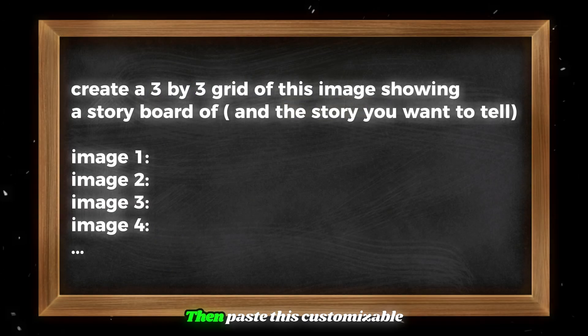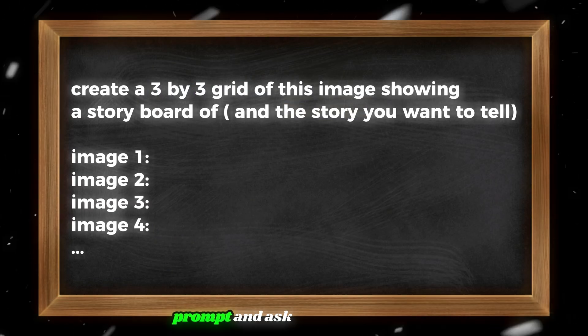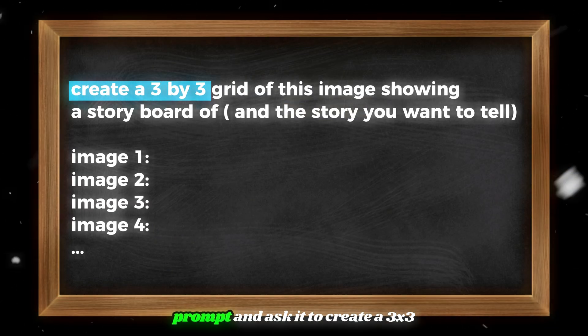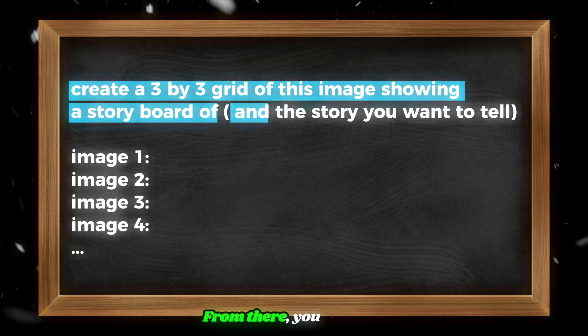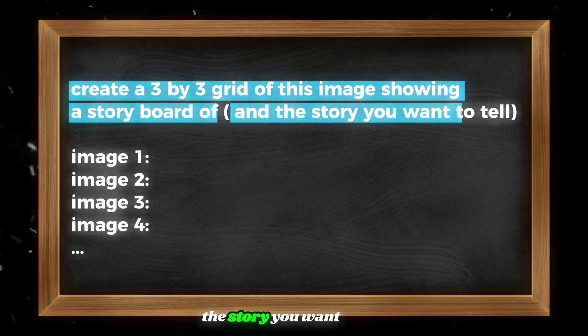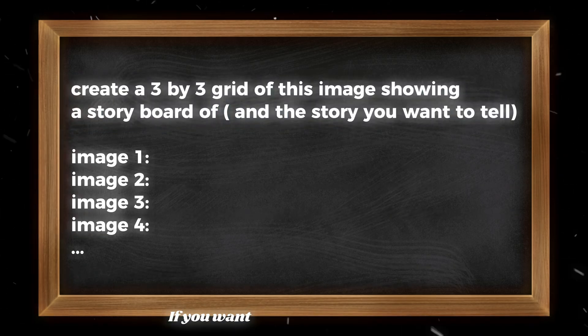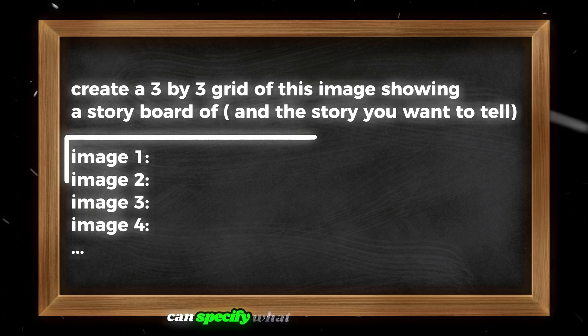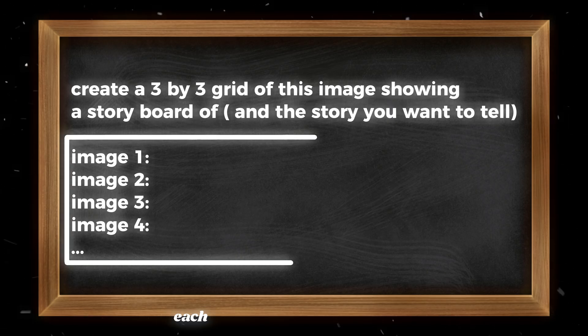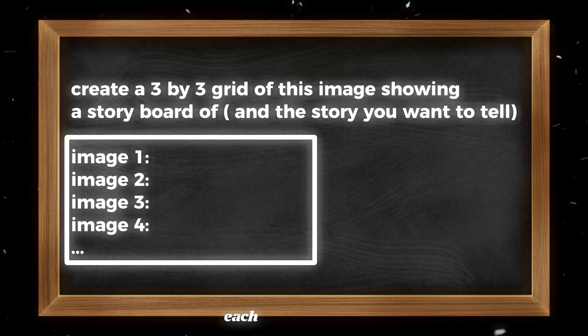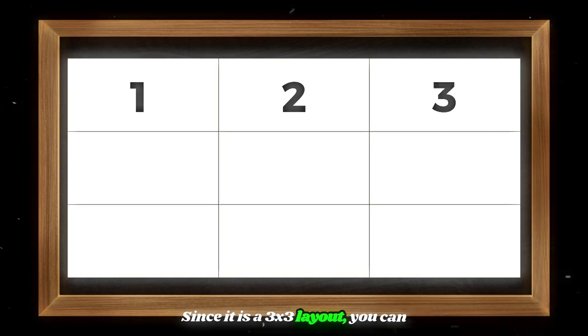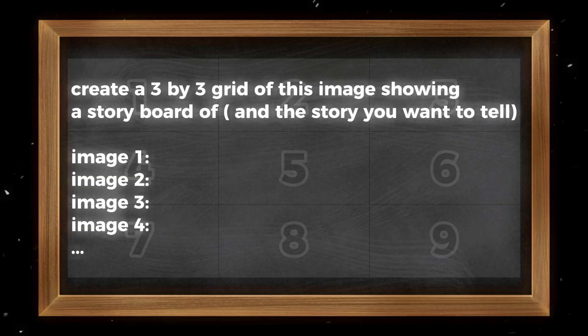Paste this customizable prompt and ask it to create a 3x3 grid showing a storyboard. From there, describe the story you want to tell. If you want even more control, you can specify what should happen in each individual image of the grid. Make sure to describe each image clearly — since it is a 3x3 layout, you can generate up to 9 scenes at once.